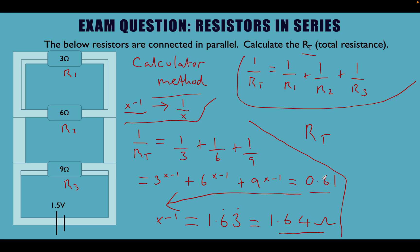With 0.61 still on our calculator screen, we press x to the minus 1 one more time, and that gives us our correct answer of 1.63 recurring, which we round to 1.64 ohms — the resistance total in this circuit. To check our answer, remember: the total resistance for resistors in parallel is always less than any individual resistor.